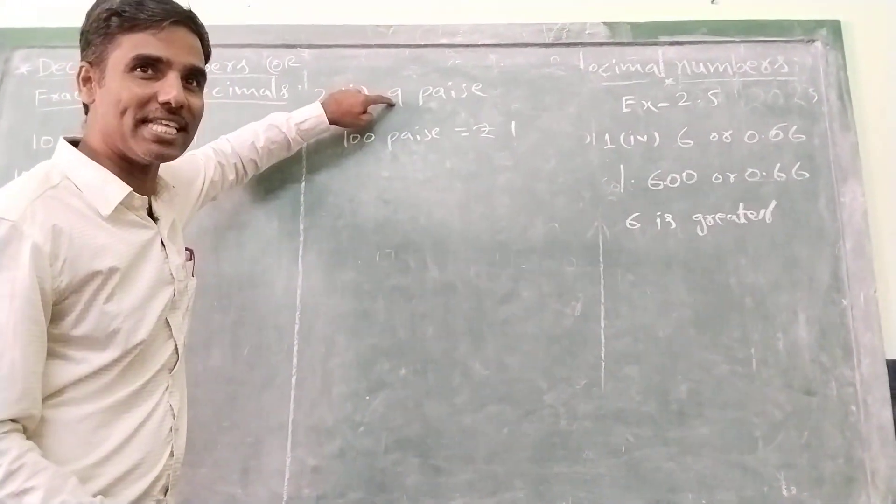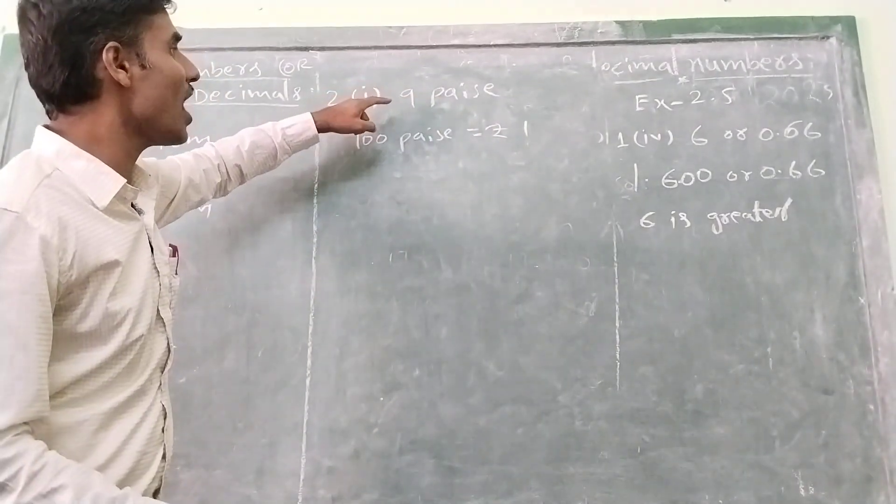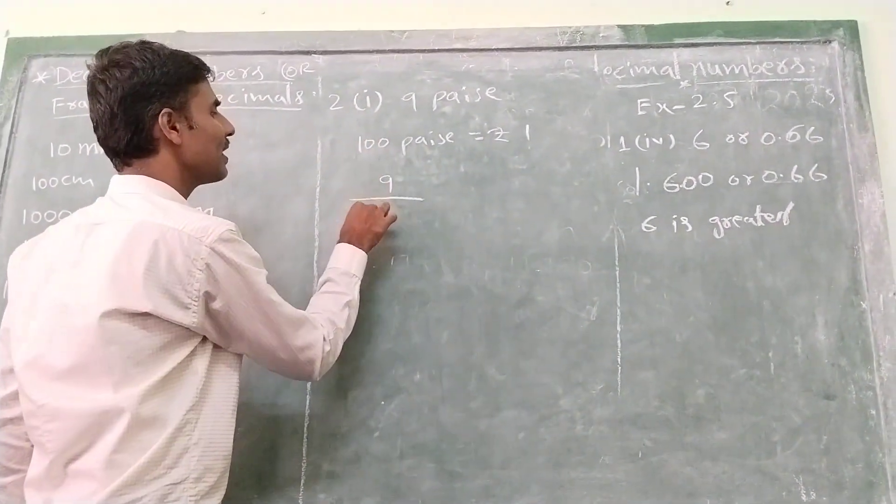Paisa is the smaller unit, and we need to convert it to the bigger one, rupees. So we have to divide 9 paisa by 100.